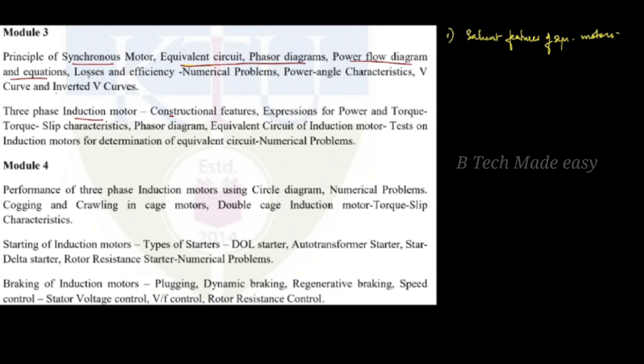The Loss and Efficiency — we use the Equivalent Circuits. The losses include Friction Loss, Iron Loss, and Copper Loss.